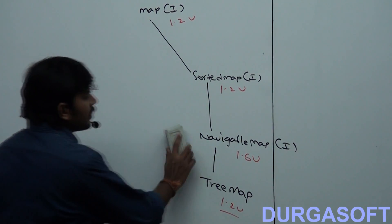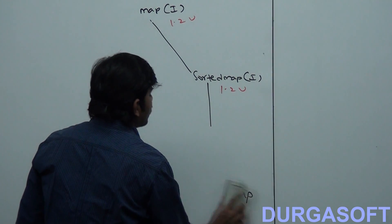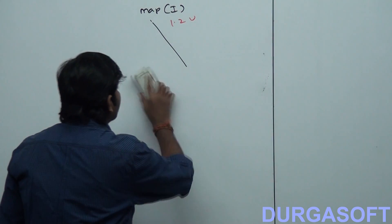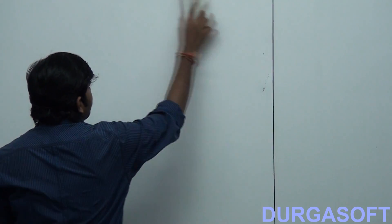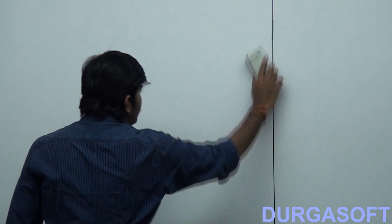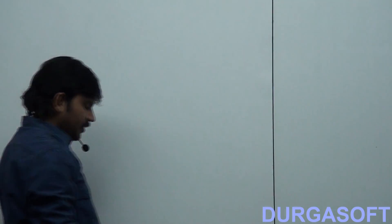So the nine key interfaces of the Collection Framework are all summarized here.